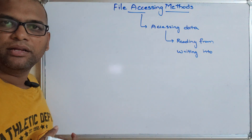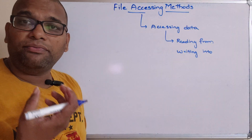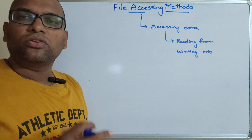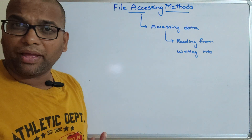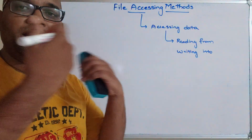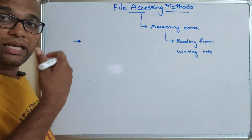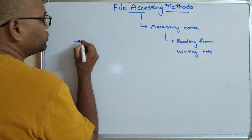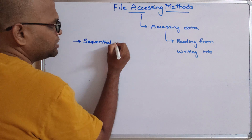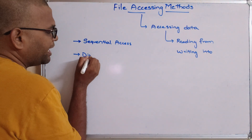We can also call it manipulation. We know the definition of a file — a file is a collection of similar data stored on a secondary device. The data can be anything: a group of characters, records, etc. So how many ways can we access that data? There are three types, or three ways, we can access data from a file. One is sequential access, the second is direct access,